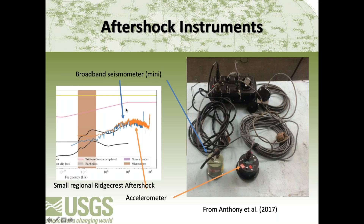Going back to our two spectra from the aftershock, since we have an earthquake in there, the data doesn't lie between the two Peterson lines — which is good because it means we have signal. The orange curve is from the EpiSensor strong motion sensor with a higher clip level, and the blue curve is from the Trillium Compact with a lower clip level but also a lower noise level. This is what we might expect from a small regional event recorded on two different co-located sensors.